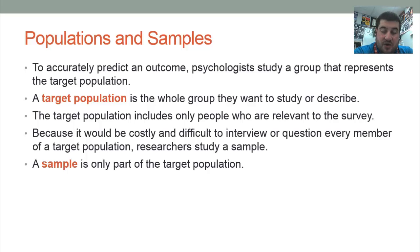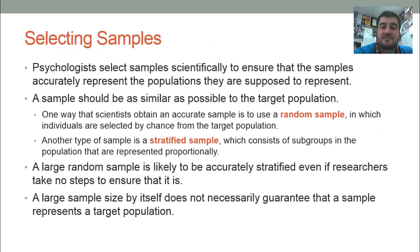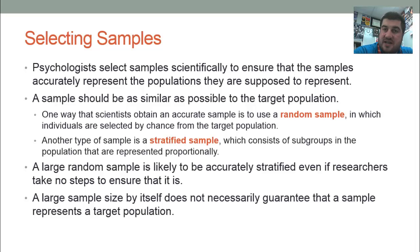We cannot interview hundreds of thousands of people, so a sample is only part of the target population — a smaller part. There are ways to make sure that the sample looks like the target population. We want it to accurately represent the populations they're supposed to represent — gender-wise, race-wise, and socioeconomic status-wise.